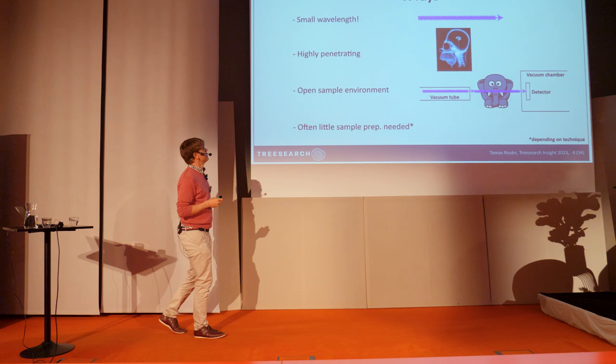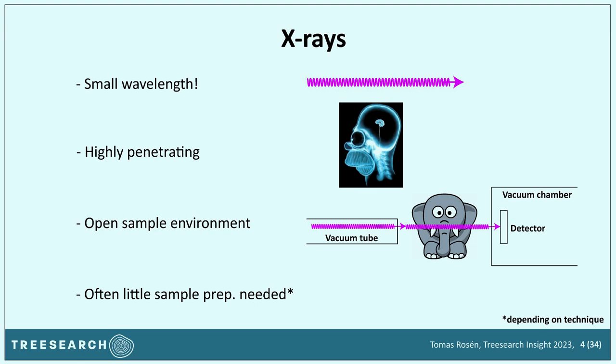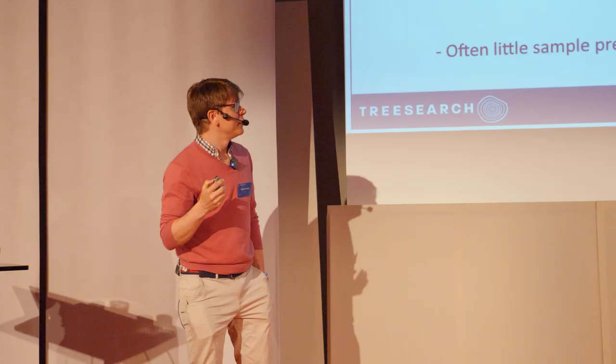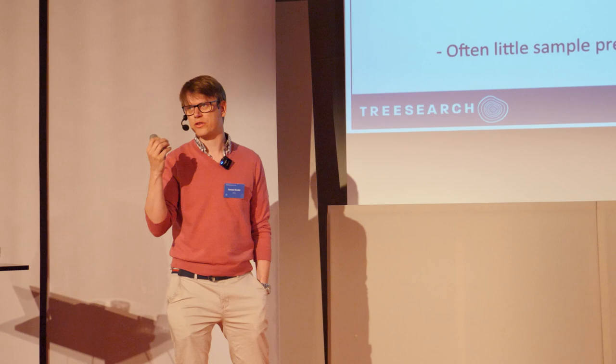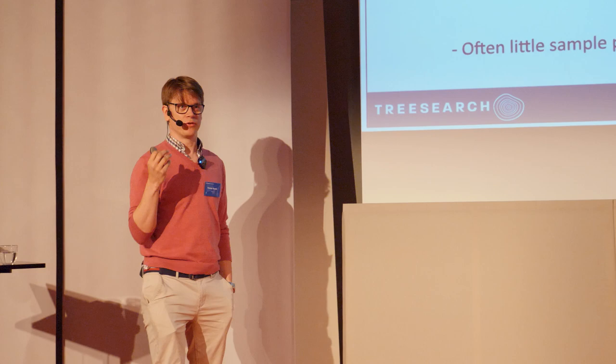That's where X-rays can bridge some of these gaps. X-rays are electromagnetic radiation — just like optical light — but with much, much smaller wavelengths. They are highly penetrating and can go through quite a lot of material, as you probably know from medical examinations. You can have your sample in an open environment, place basically anything in front of the X-ray beam, and often need very little sample preparation. However, to use X-rays to look at the nanoscale, you need certain special properties — not just any X-ray source like a hospital CT scanner, which typically gives millimeter resolution.